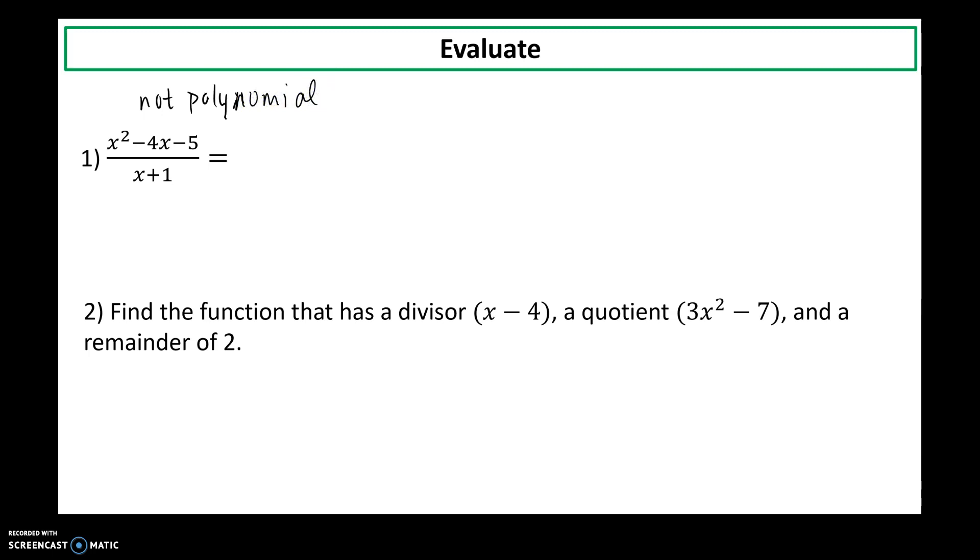Okay, so let's check to see if the top is factorable. So I need the factors of negative 5 that add to negative 4. So x plus 5, x minus, no, let's try this again. The 5 needs to be negative. So x minus 5 times x plus 1, all divided by x plus 1.